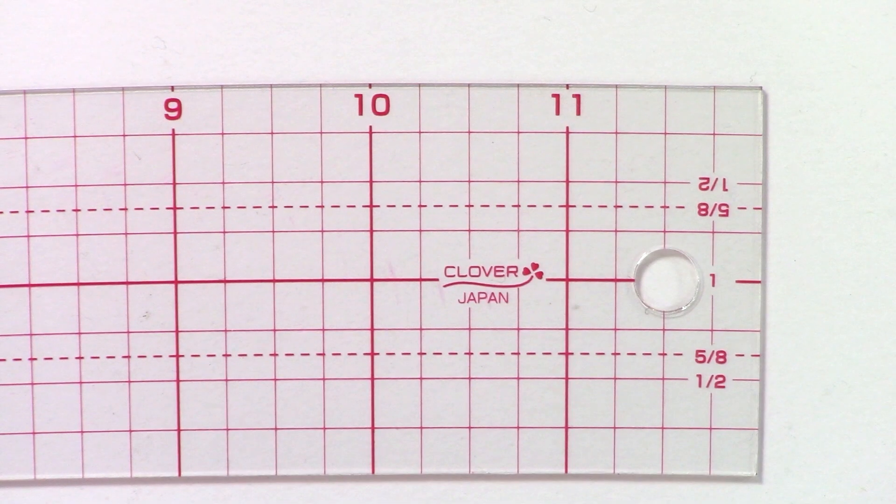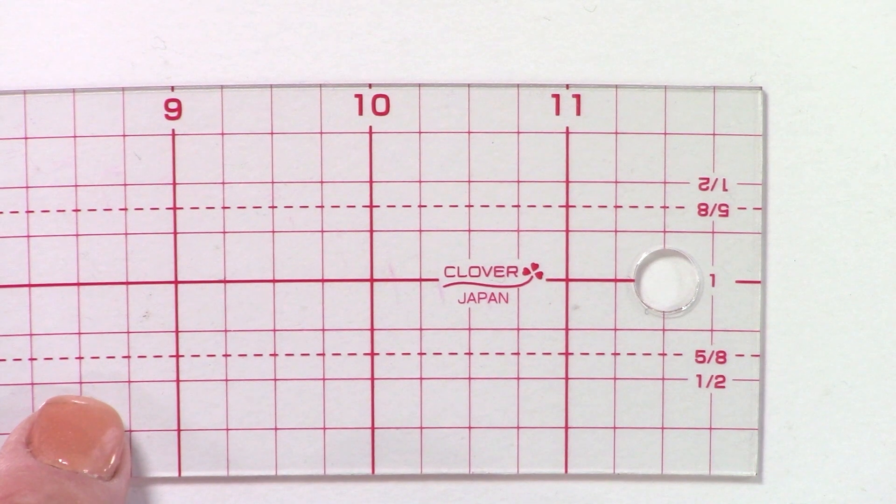The Curve Ruler with Mini Rulers set features transparent rulers with clearly marked ¼ inch guidelines that are easy to read.